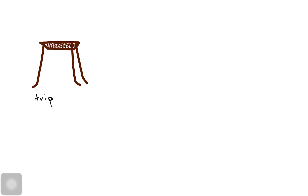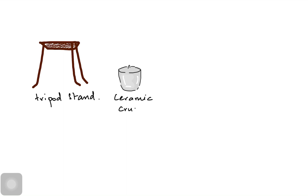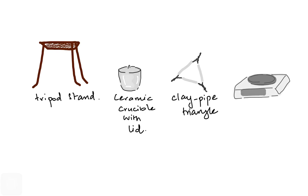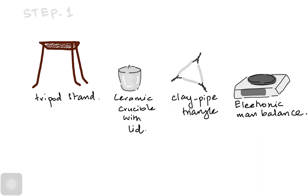Which apparatus do we need? First, we need a tripod stand where we are going to put our sample. Next, we need a ceramic crucible where we will be heating our sample. Then we need a clay pipe triangle, which is placed on top of the tripod stand to fix our crucible. Finally, we need an electronic mass balance because it has a higher level of accuracy.